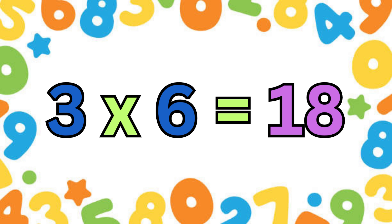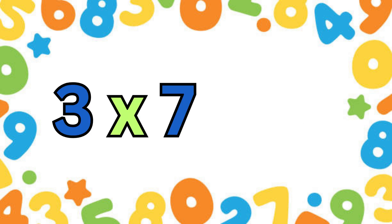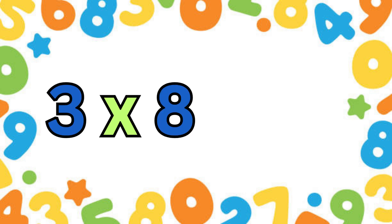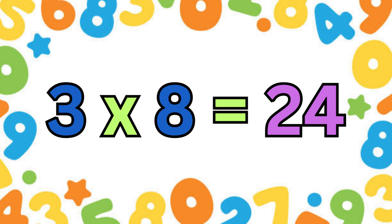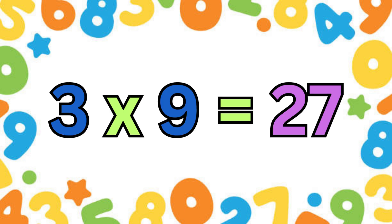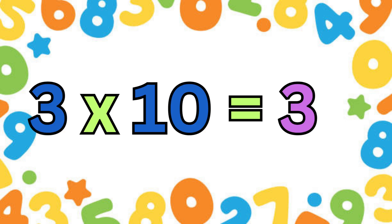Three sixes are eighteen. Three sevens are twenty-one. Three eights are twenty-four. Three nines are twenty-seven. Three tens are thirty.